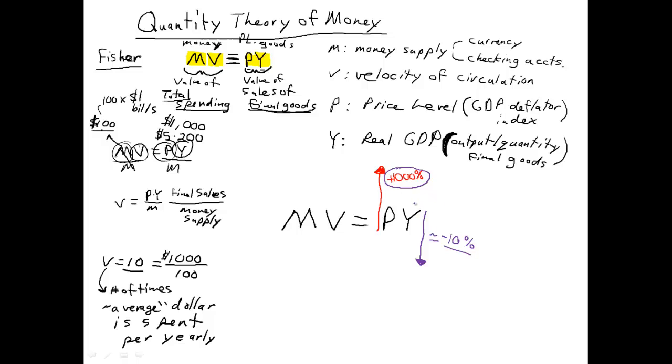Usually, output's going to go up 2 to 3% per year, right? So it's going to go up, okay? So if inflation's going up and output is usually going up, okay? Inflation's going up, output is usually going up a little bit.